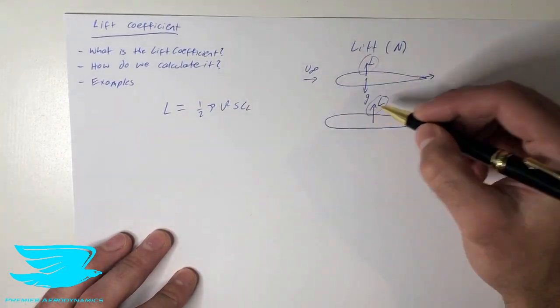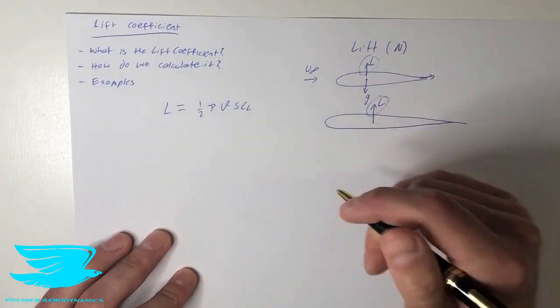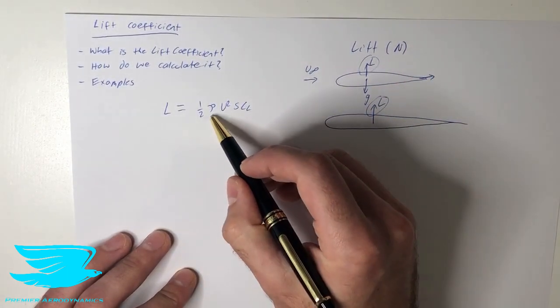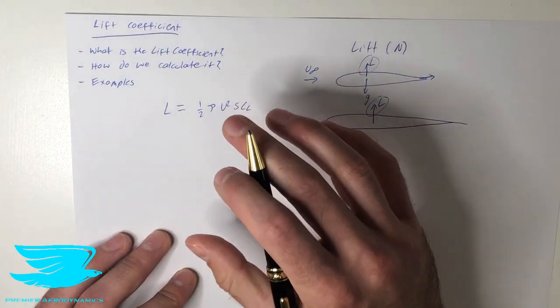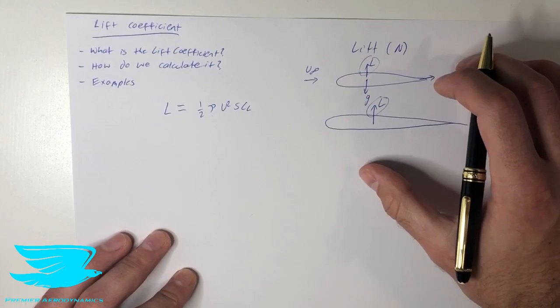We have the lift here, which we've mentioned here is the force pushing up away from the ground. We have the density rho, so the density of air, or it could be water, or whatever. If we have air, we have airfoils. If we have water, it's hydrofoils, and so on.